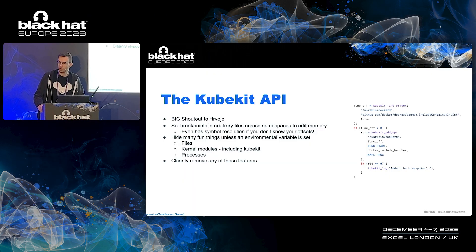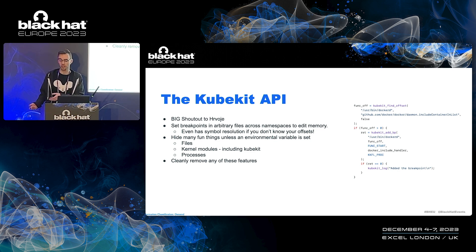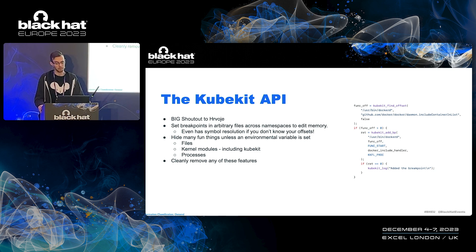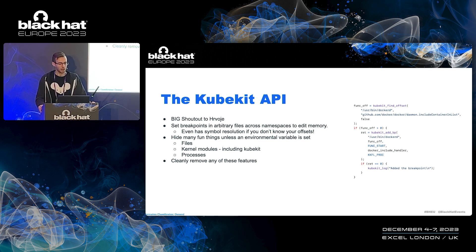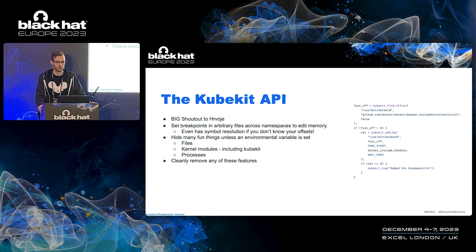Kubekit itself is organized around an API. You can see an example here for Docker setting a breakpoint — basically you can say where you want to pause the program that's running, how you want to edit memory, and then resume execution of the service. If you don't have the offset — Kubernetes ships stripped binaries without symbols — you can also set an offset or resolve your symbols. Additionally, we support hiding files, the kernel module itself (kubekit.ko), and processes. We also support removing the rootkit itself during runtime, so if someone's doing forensics, you can cleanly remove kubekit and have the server still running.